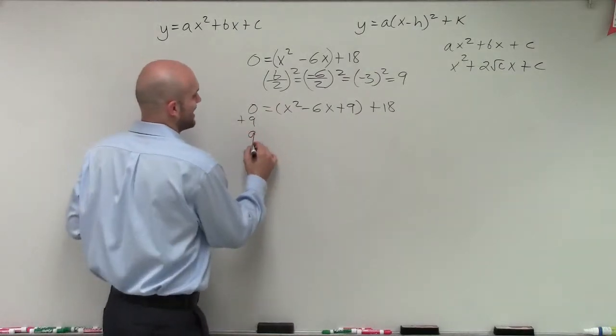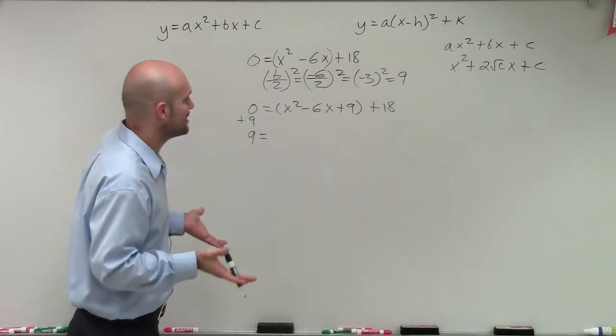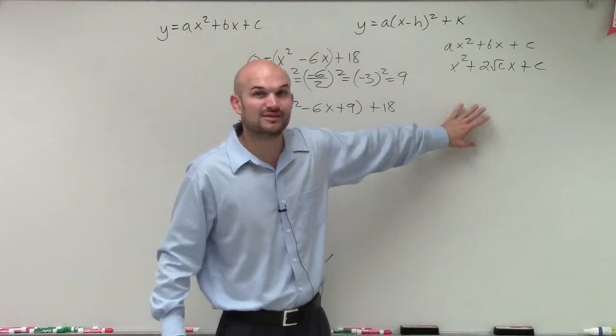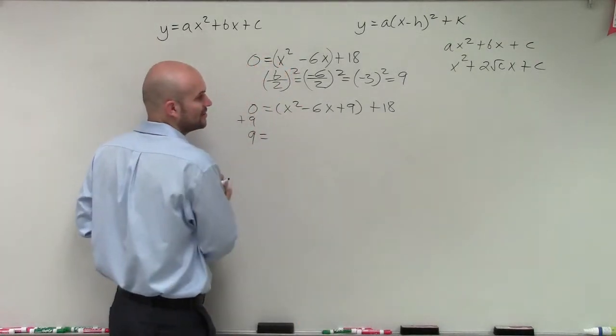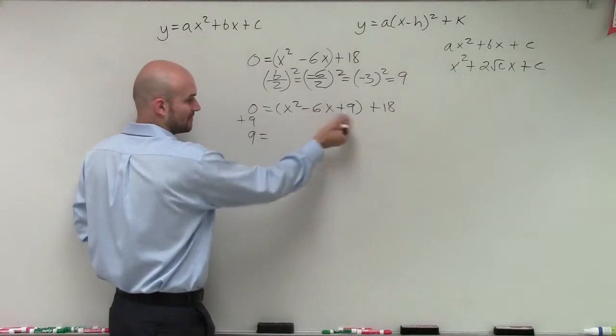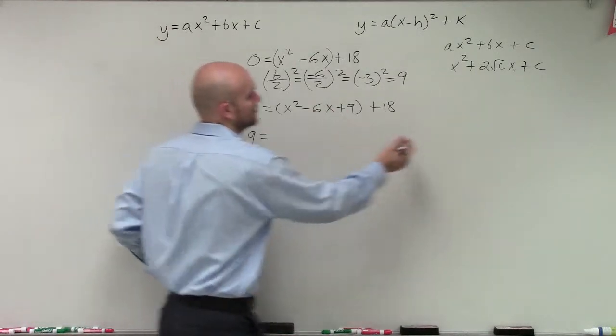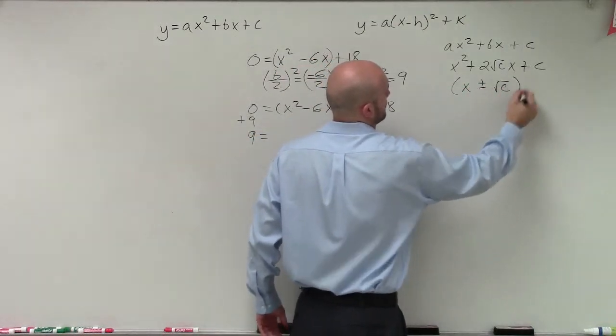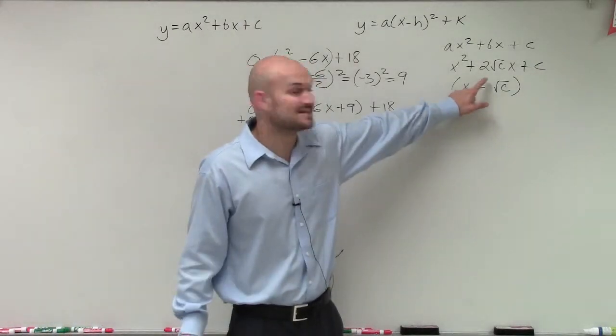So now I have 9 equals. Now the important thing, why do we have a perfect square trinomial? Why do we even deal with that perfect square trinomial? Well, we do that is because a perfect square trinomial is very, very easily factored. So now what we can simply do is say, all right, my perfect square trinomial is simply going to be x plus or minus the square root of c.